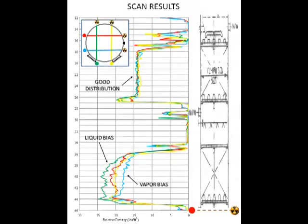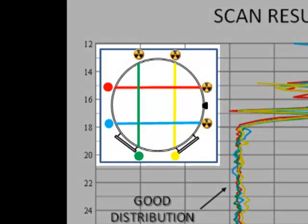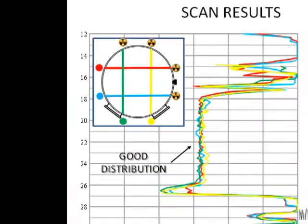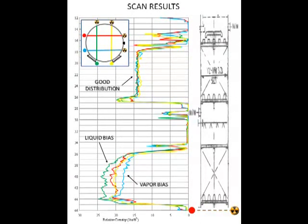Thus, by performing four scans, a two by two grid scan on the tower, we are able to detect maldistribution through the packing, which would not be captured by a single scan on the tower.